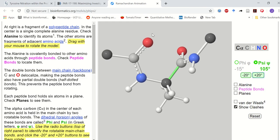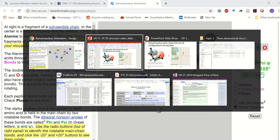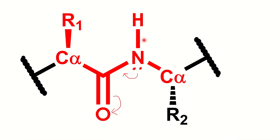We can think of this as a plane. Because of this rigidness, because of this double bond, we can define a plane in which all of these atoms lie. So the carbonyl oxygen, the carbonyl carbon, the amide nitrogen, and the amide hydrogen all lie in the same plane.